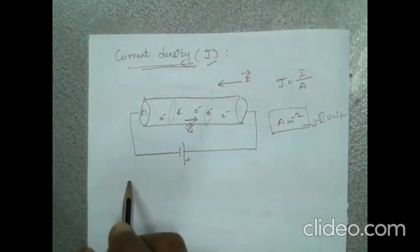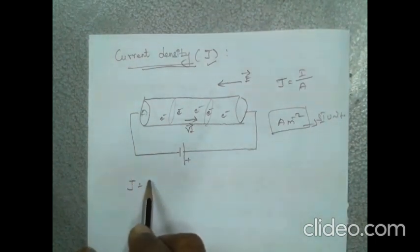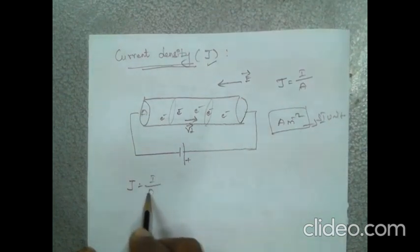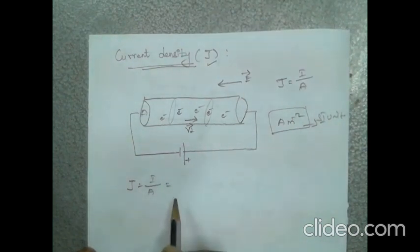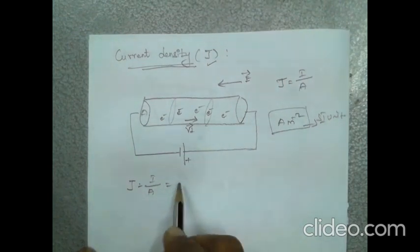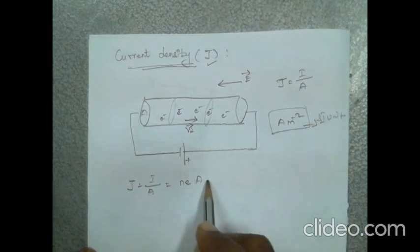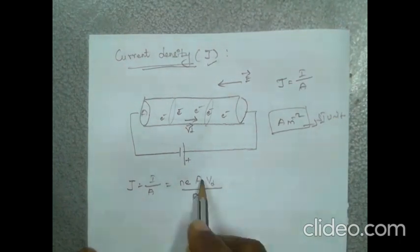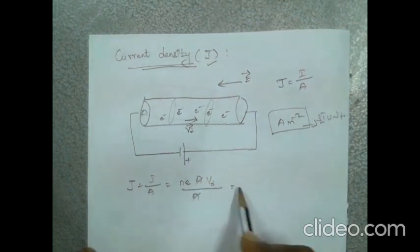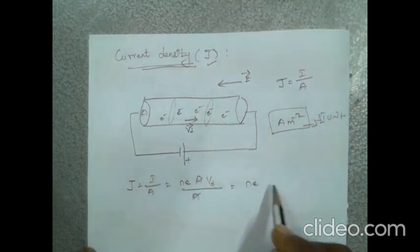Further, J equals I divided by A. Since I equals n e A VD, substituting gives J equals n e A VD divided by A. The A terms cancel, so current density J equals n e VD.